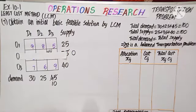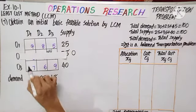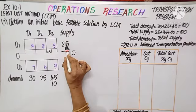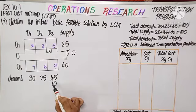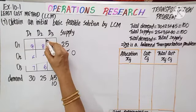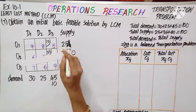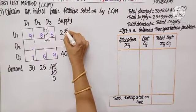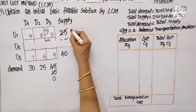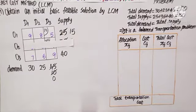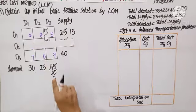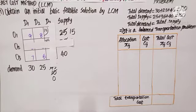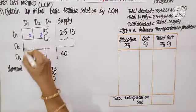Let us choose the minimum of the remaining cells — that is 5. Here I have supply 25 and demand 10. So the maximum I can allocate is 10. This becomes 0, and here 25 minus 10 gives 15. This column is now done, so let us hide it. Four remaining cells.